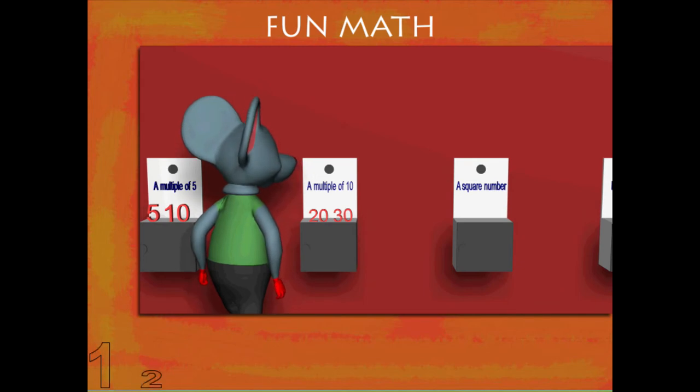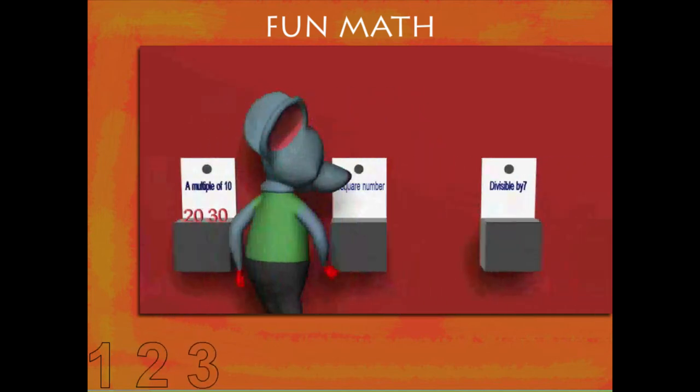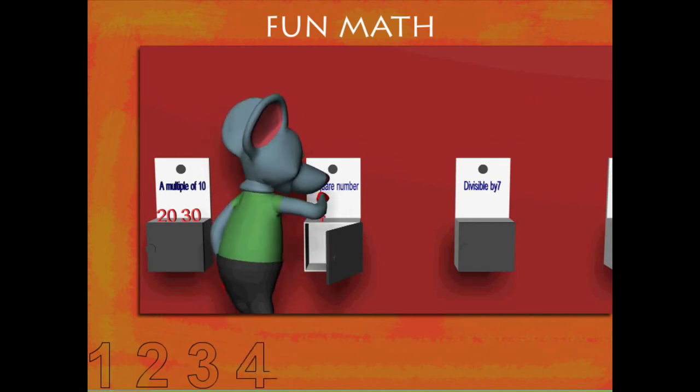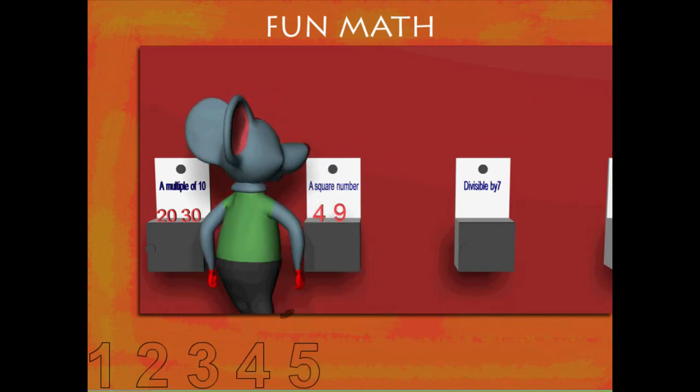He moves ahead to look for a square. He pulls out the square of 7, that is 49.